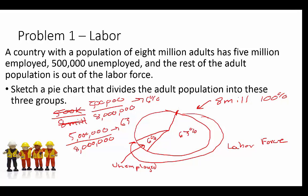Excel will actually draw the graph and break it up — that's pretty cool. So 63% are employed. The last bit is about 31%: 63 plus 6 equals 69%, so about 31% of our population is out of the labor force. We calculate that by taking 8 million minus the labor force of 5.5 million, which equals our out-of-labor-force number.